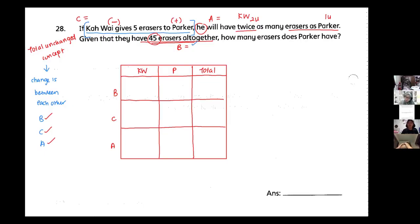Change Kawai, I know the change is there. Can you see that? The change: Kawai gives five erasers, minus five, to whom? To Paka. Paka plus five.